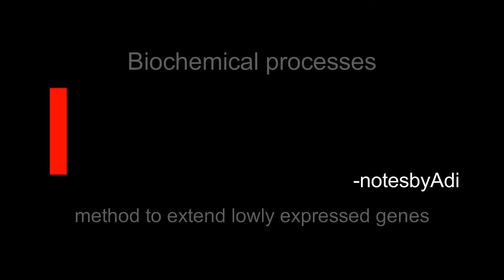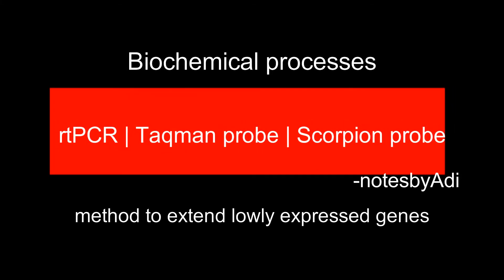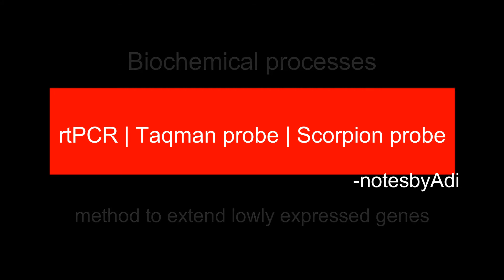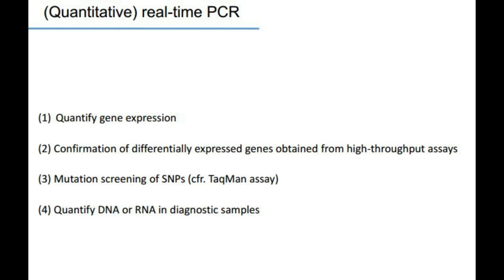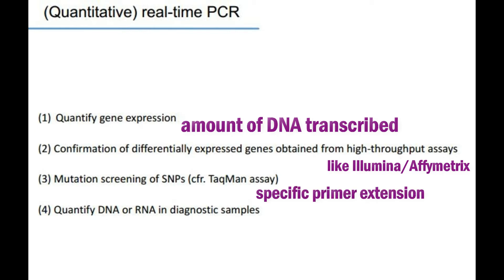To identify particular gene products, we can use specific identification techniques like quantitative real-time PCR. We can identify gene expression, confirm differentially expressed genes obtained from high-throughput assays, even do mutation screening of SNPs using Taqman assays, and even quantify DNA or RNA in diagnostic samples.